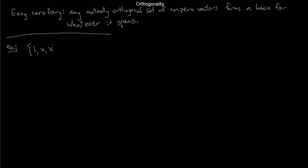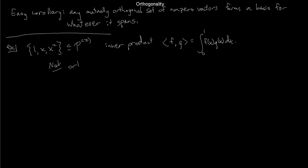Let me give an example. Take the polynomials 1, x, and x² — a subset of P2, the polynomials of degree at most 2. This is an inner product space where the inner product of any two functions is the integral of their product on [0,1]. Notice that 1, x, and x² are not mutually orthogonal: the inner product of 1 and x is 1/2, which is not 0.